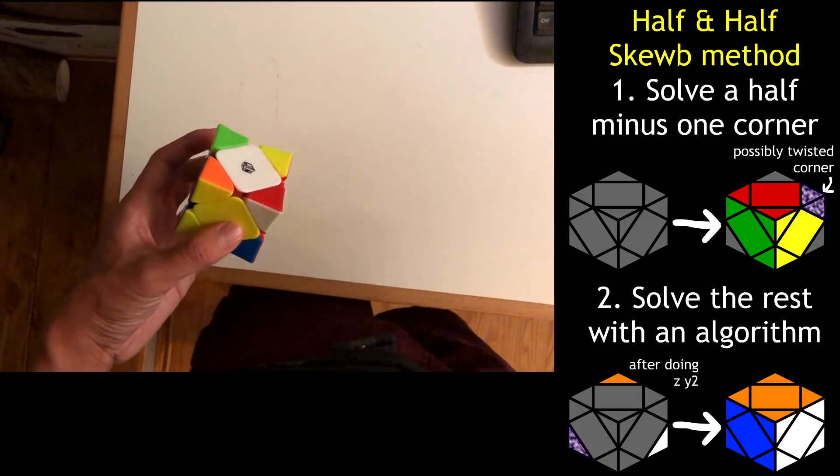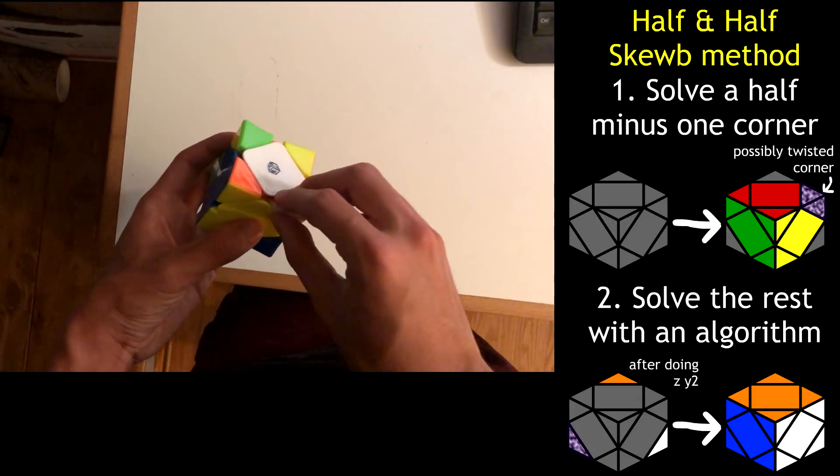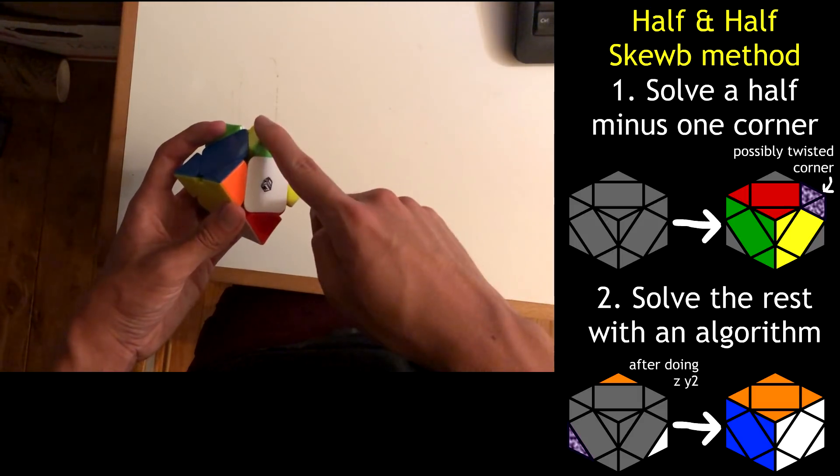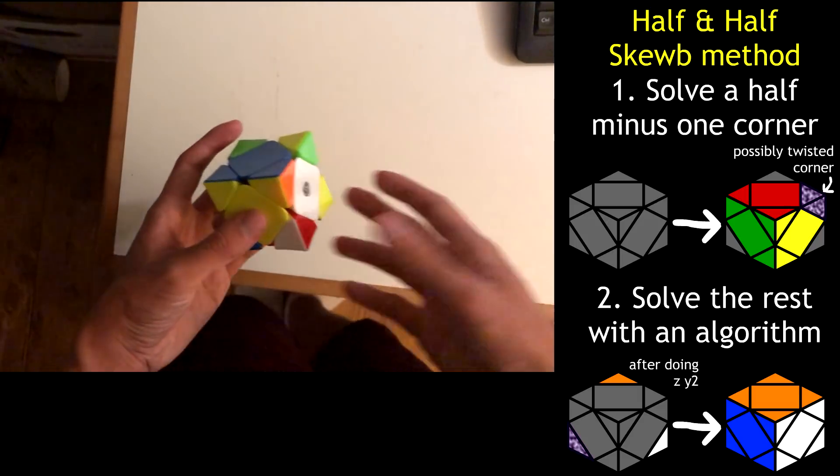However, I said we only have to solve half minus a corner, right? So we actually can forget about one corner, and all we need is a center and the corner next to it, and then we'll have half of a SCUBE minus a corner.